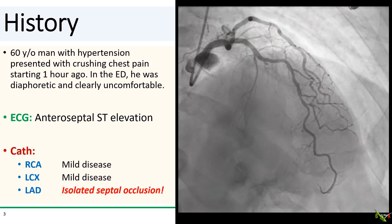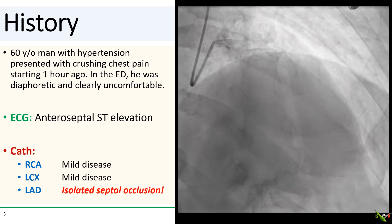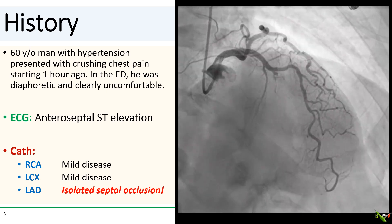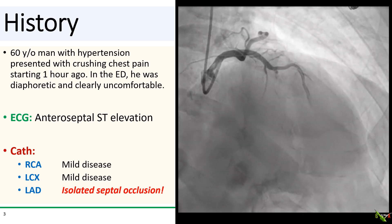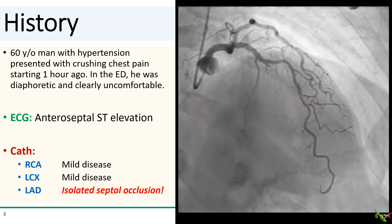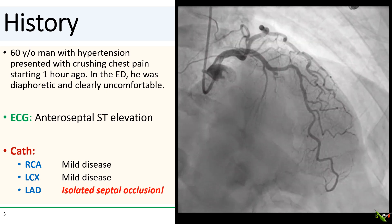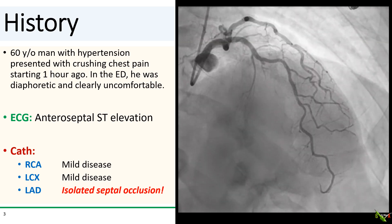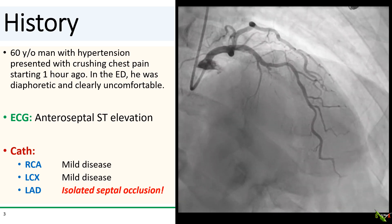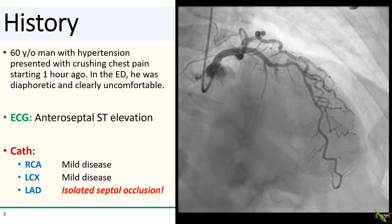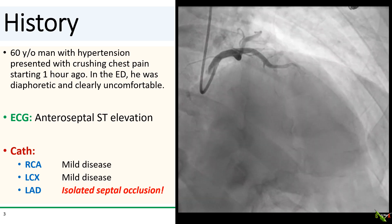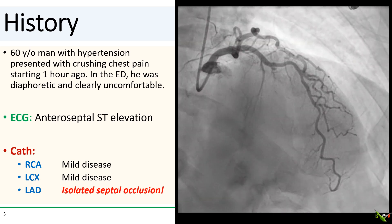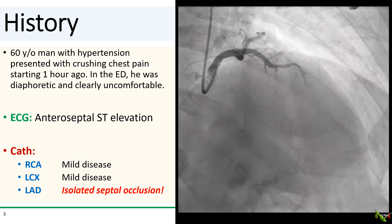On cath, the RCA and circumflex both had only mild disease, and surprisingly the LAD, which you see here, has mild disease as well. And if you look carefully, you can see that the culprit is the stumped-off septal branch originating in the high-mid LAD.